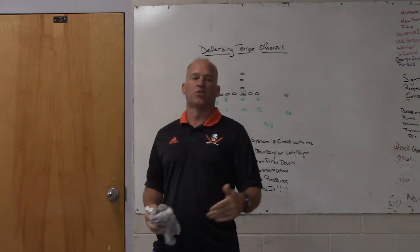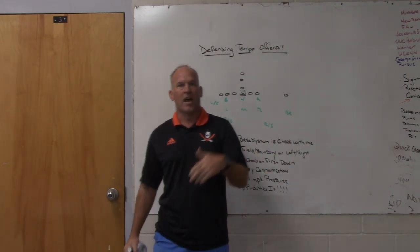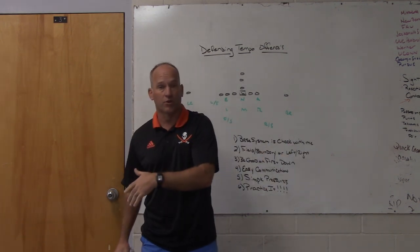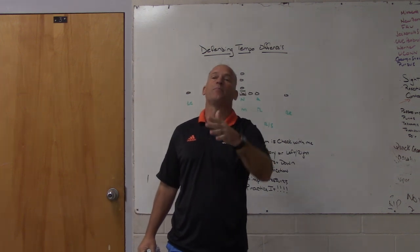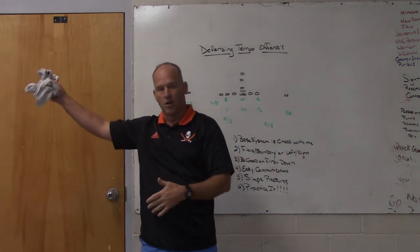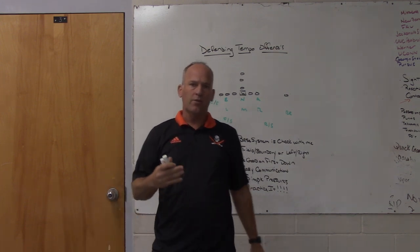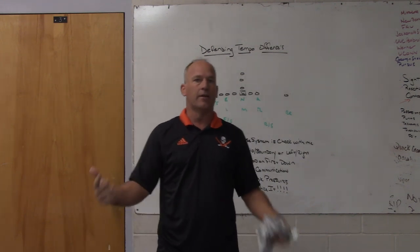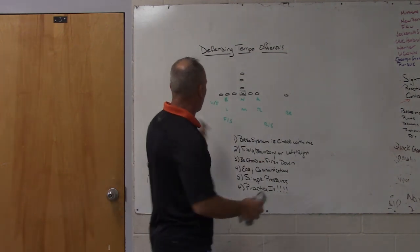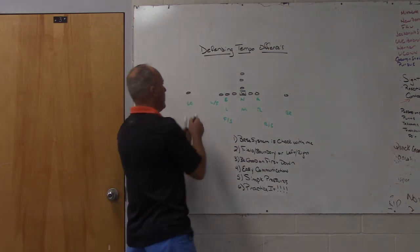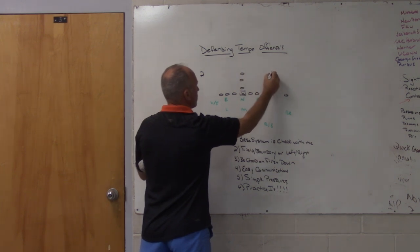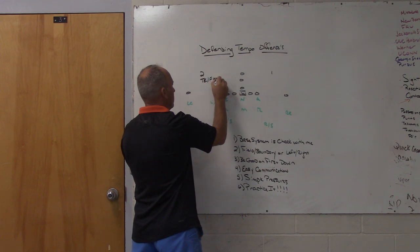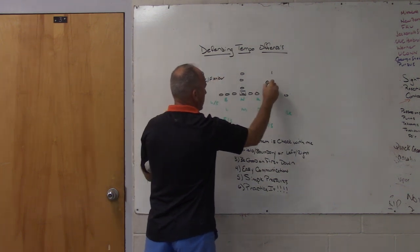We have a check-with-me system that our three safeties have to be able to understand — how to put us in the right coverages based on the deployments of the receivers and the types of receivers out there: attached tight ends, open wide outs. That's how we start with our base system anyway, so we feel like we're always ready to defend an up-tempo type team. If we got a two-by-one formation — two receivers here by one receiver over here — on this side it's a tight end and a flanker, and on this side it's an open wide receiver.